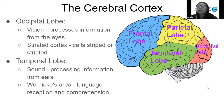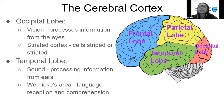The occipital lobe is responsible for vision — processing information received from your eyes. Another feature of the occipital lobe is that it's a striated cortex, meaning it has cells that are striped or striated, which makes it look a little different from the rest of the other lobes.